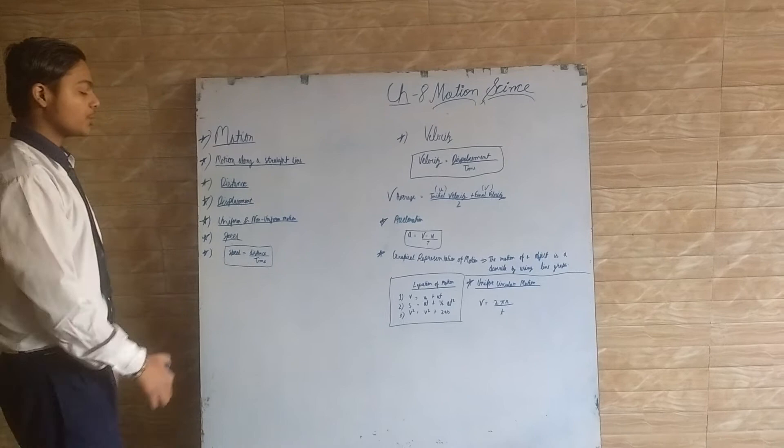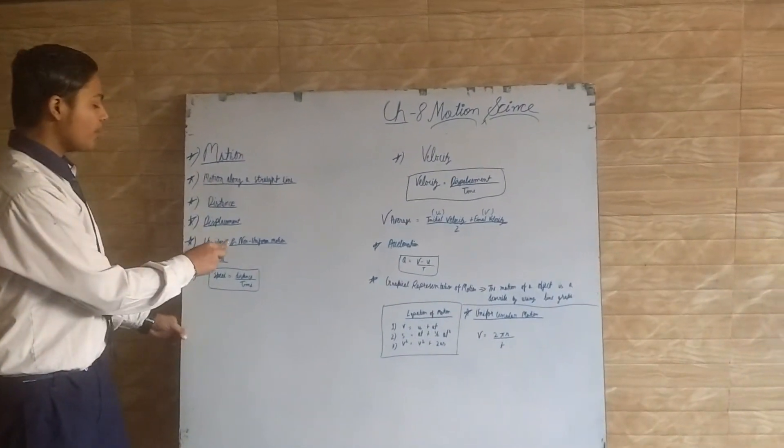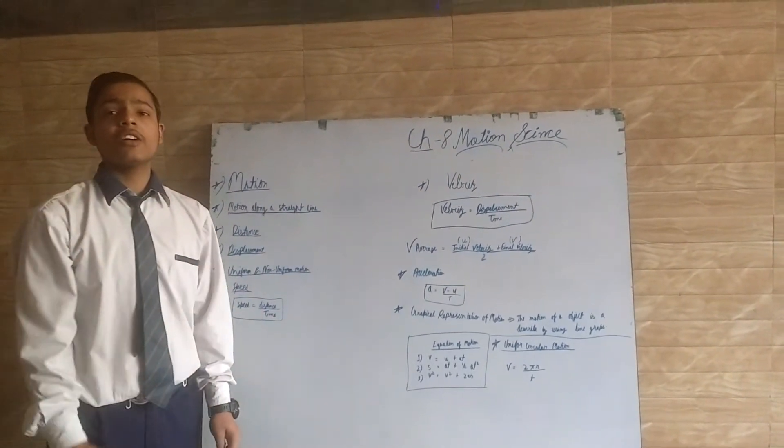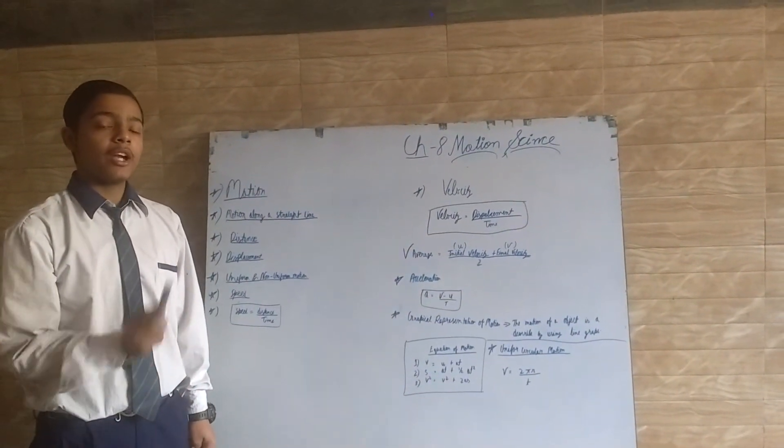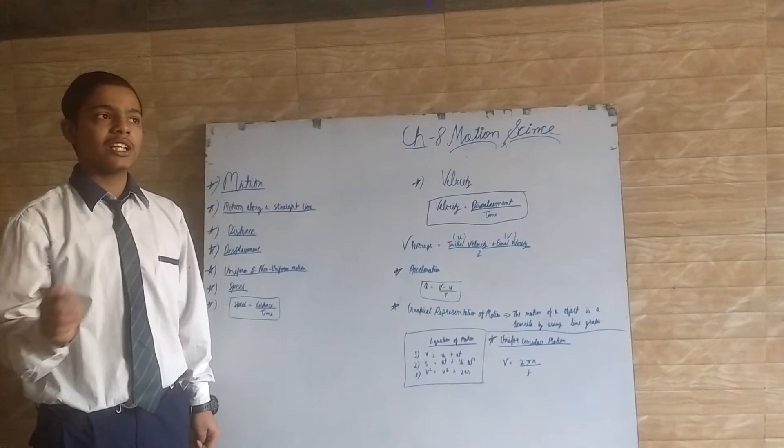Uniform and non-uniform motion: In uniform motion, the object covers equal distances in equal time intervals. In non-uniform motion, the object covers unequal distances in equal time intervals.